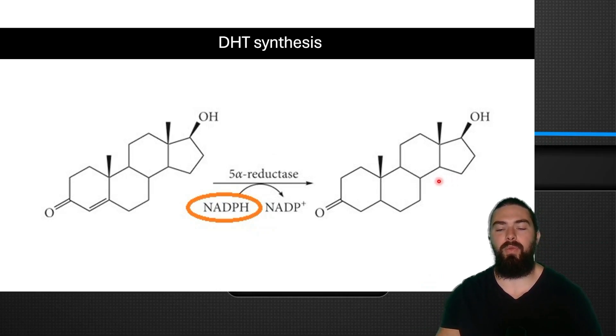An oxidation process would be when DHT converts back into testosterone, although 5-alpha reductase is obviously a non-reversible process. So it doesn't go that way, but it's a reductive NADPH.